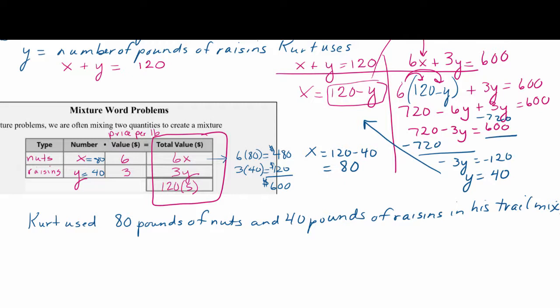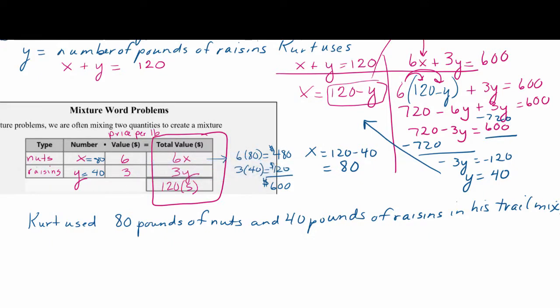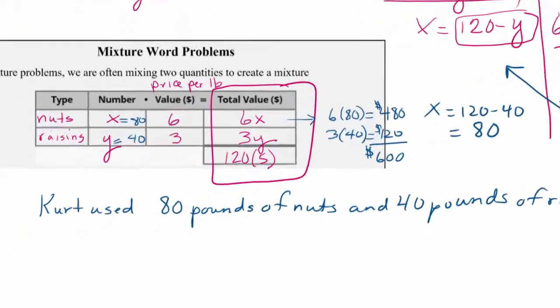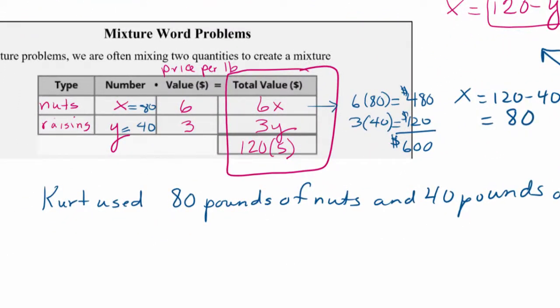Dividing by negative 3 gives y equals 40. Then x equals 120 minus 40, which is 80. So Kurt used 80 pounds of nuts and 40 pounds of raisins. Checking: 6 times 80 is $480 for nuts, and 3 times 40 is $120 for raisins — adding those gives $600, which checks out.